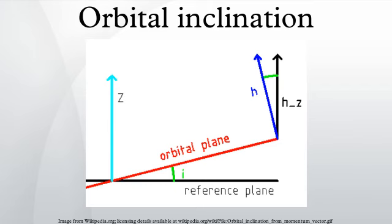An inclination greater than 90 degrees and less than 180 degrees is a retrograde orbit. An inclination of exactly 90 degrees is a polar orbit, in which the spacecraft passes over the north and south poles of the planet.